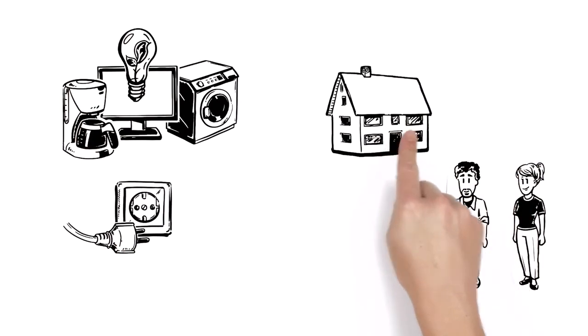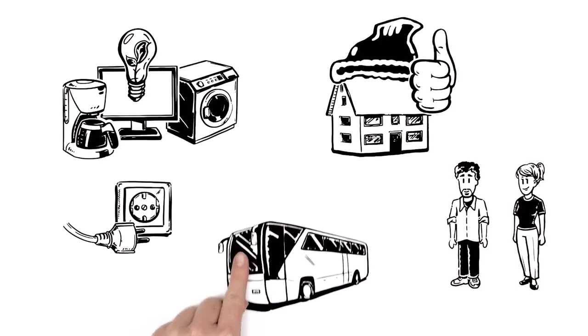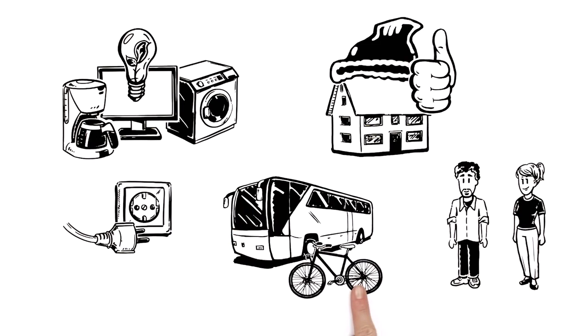Also, he's improved the thermal insulation of his house to heat it more efficiently. And as often as he can, he takes the bus or bike instead of the car.